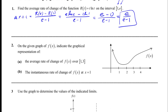Now, on the given graph of f(x), indicate the graphical representation of the average rate of change of f(x) over [1, 3]. We're actually going to draw on the graph how we represent the average rate of change between 1 and 3. Remember, that corresponds to a secant line — the slope of that indicated line is the average rate of change over [1, 3].